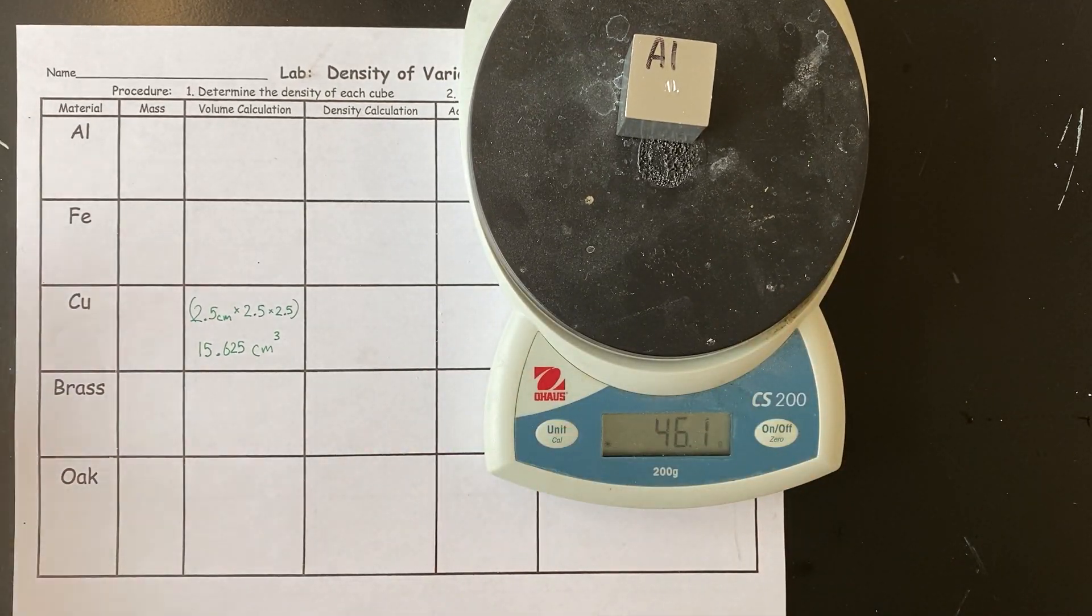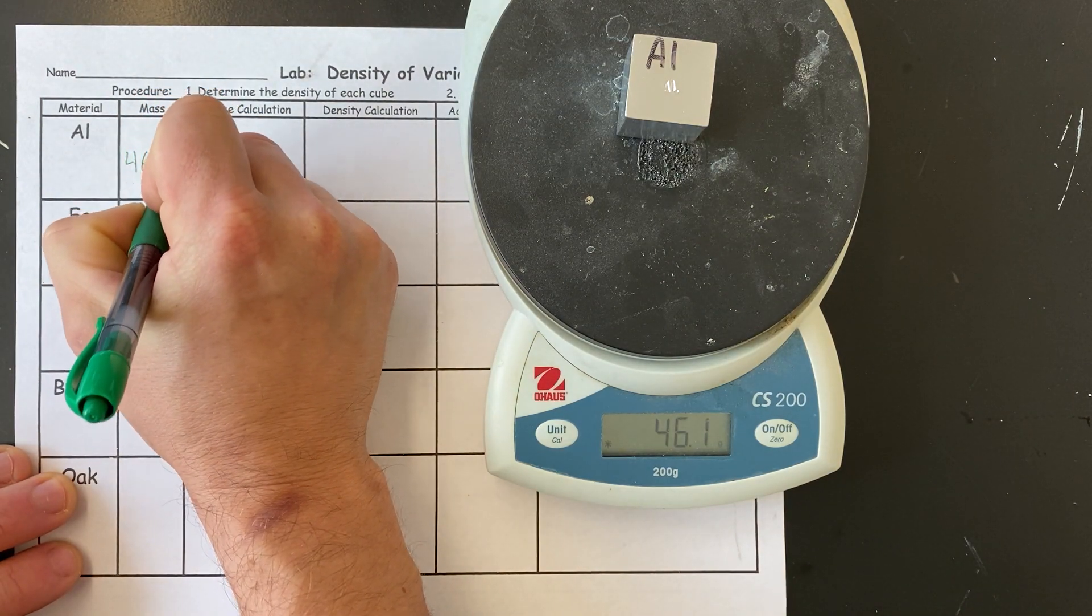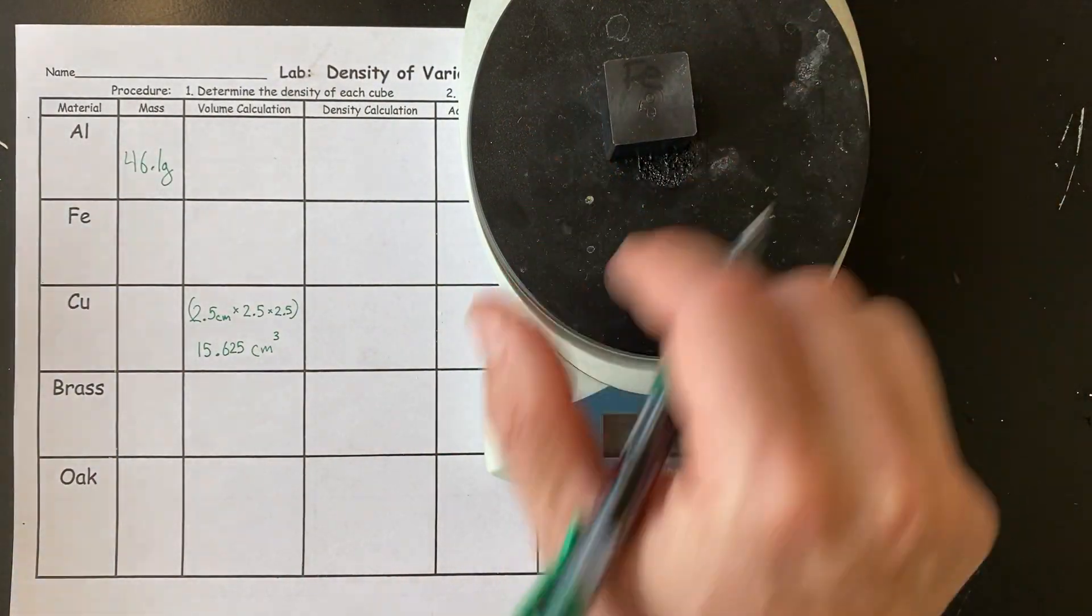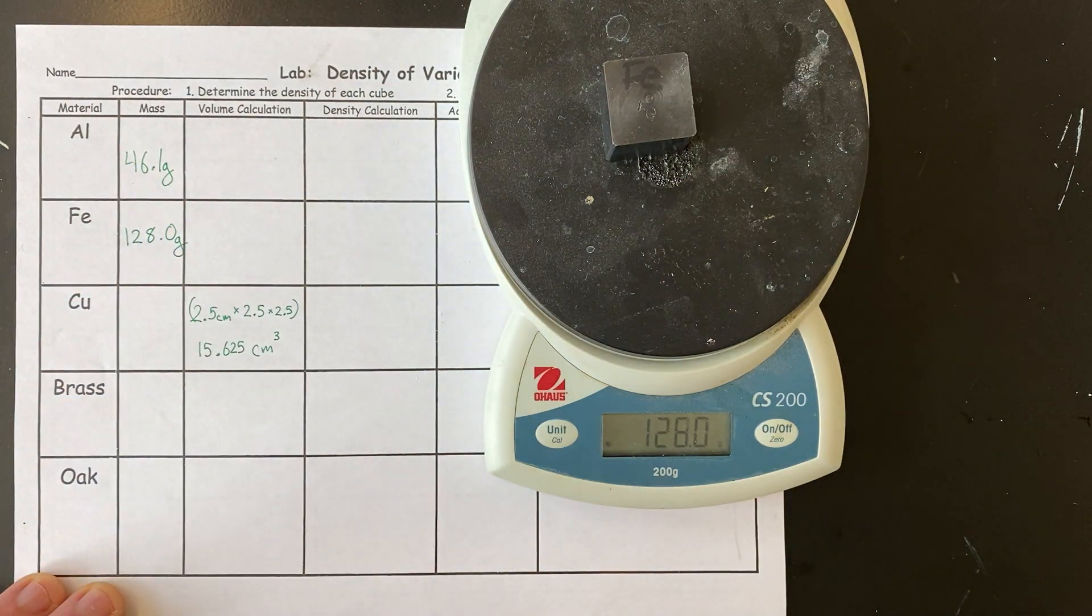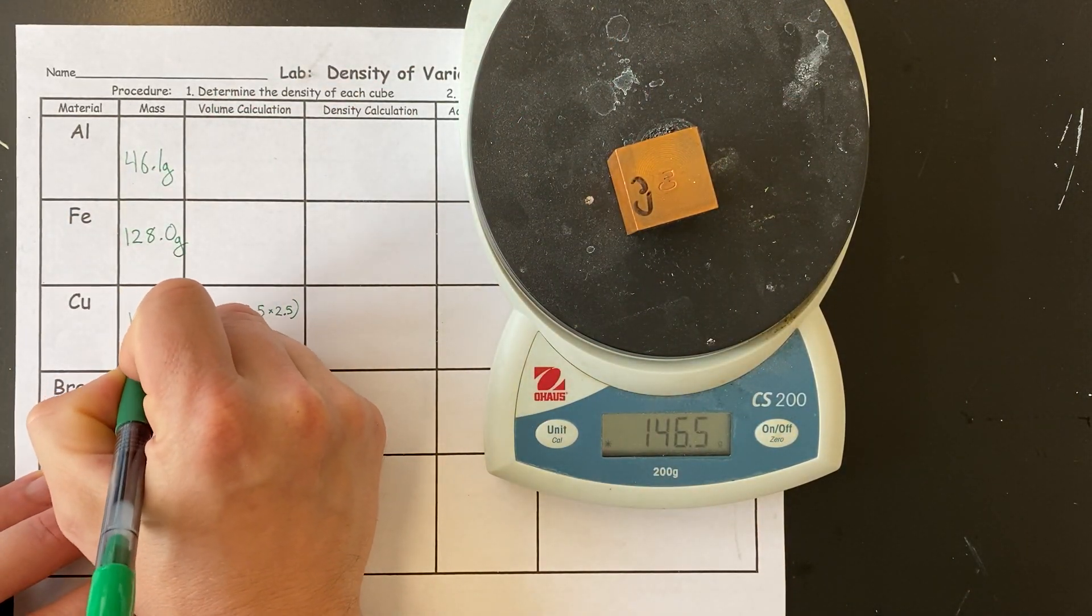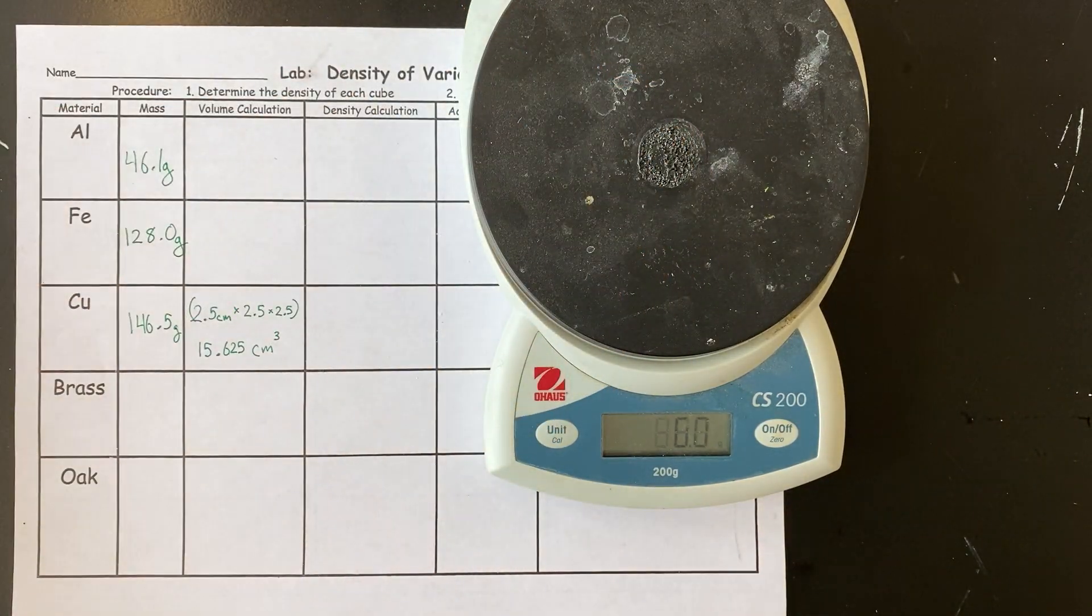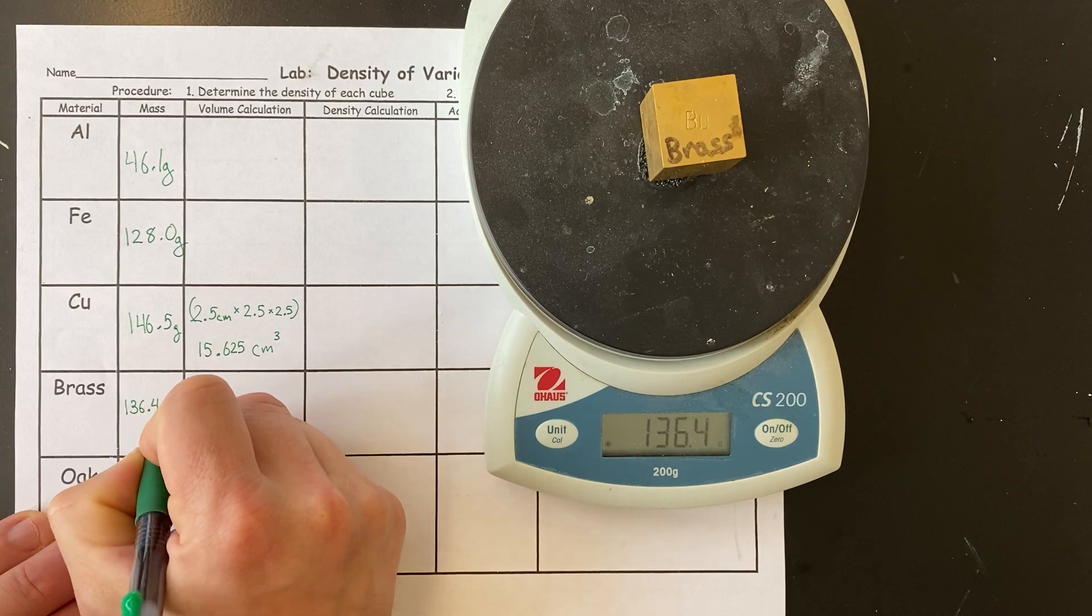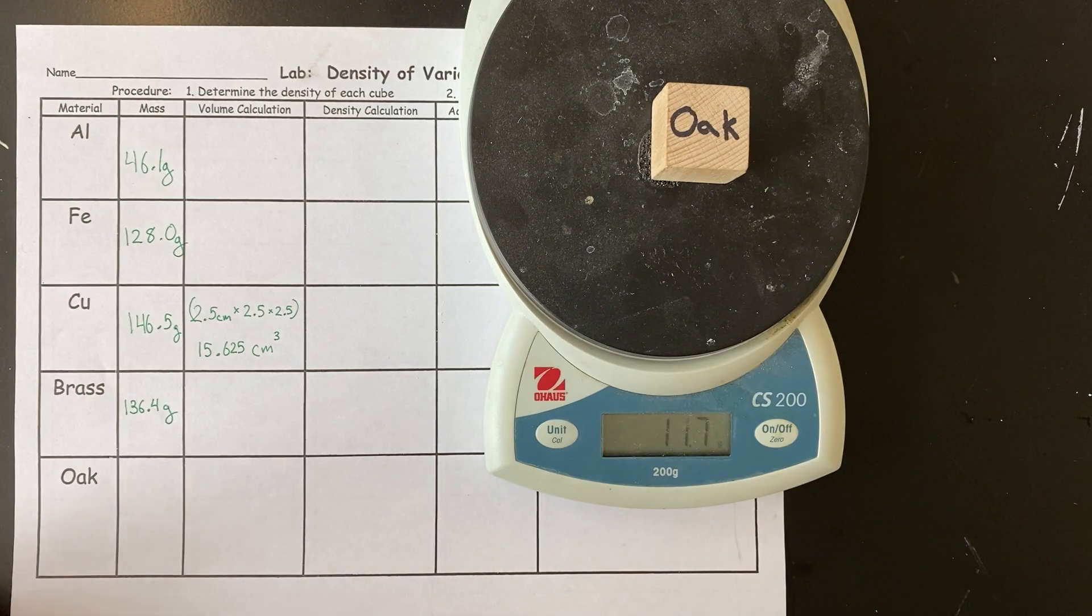Aluminum has a mass of 46.1. The next one is iron. And the next one is copper. Then brass. Then oak.